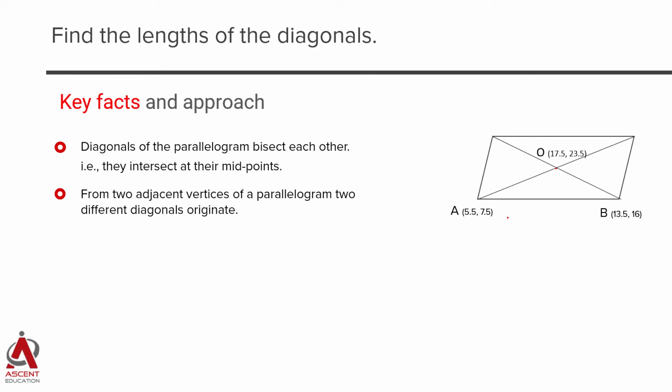From two adjacent vertices, from A and B, these two vertices, we will actually be drawing not a single diagonal, we will actually be drawing two different diagonals. We can only draw diagonals to points which are diagonally opposite to each other. So the diagonal from A is going to be AC and the diagonal from B is going to be equal to BD.